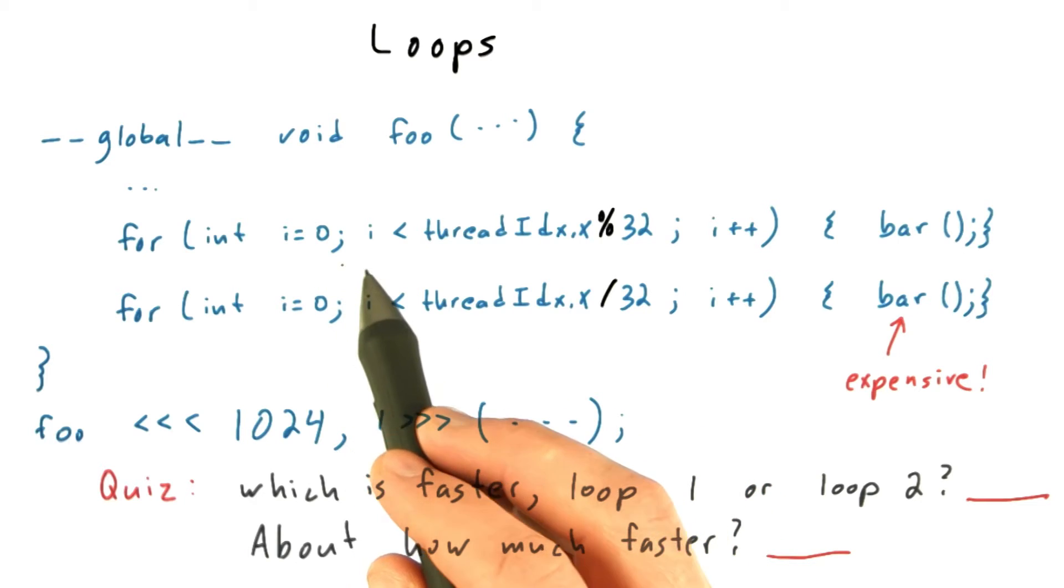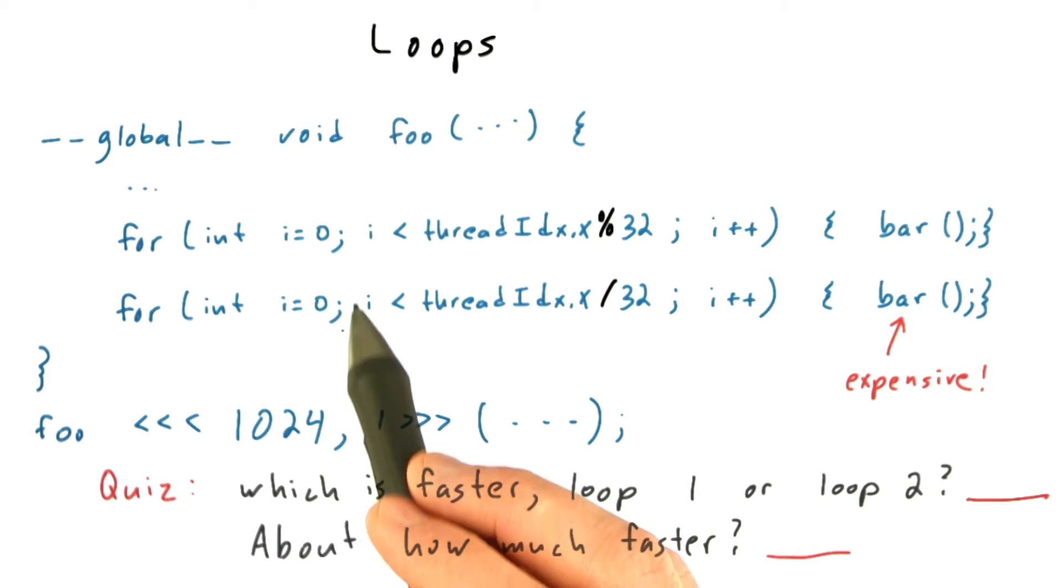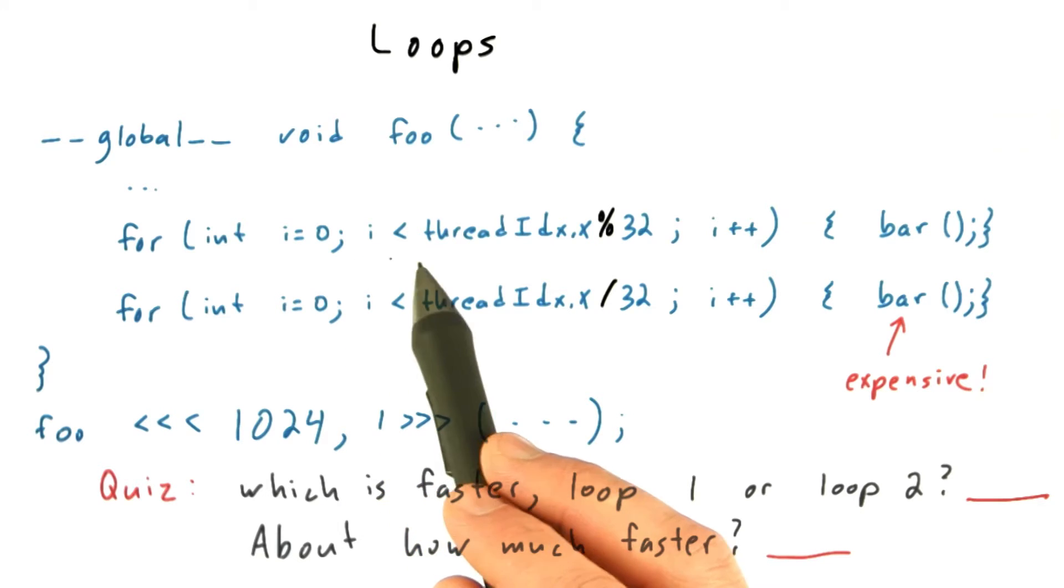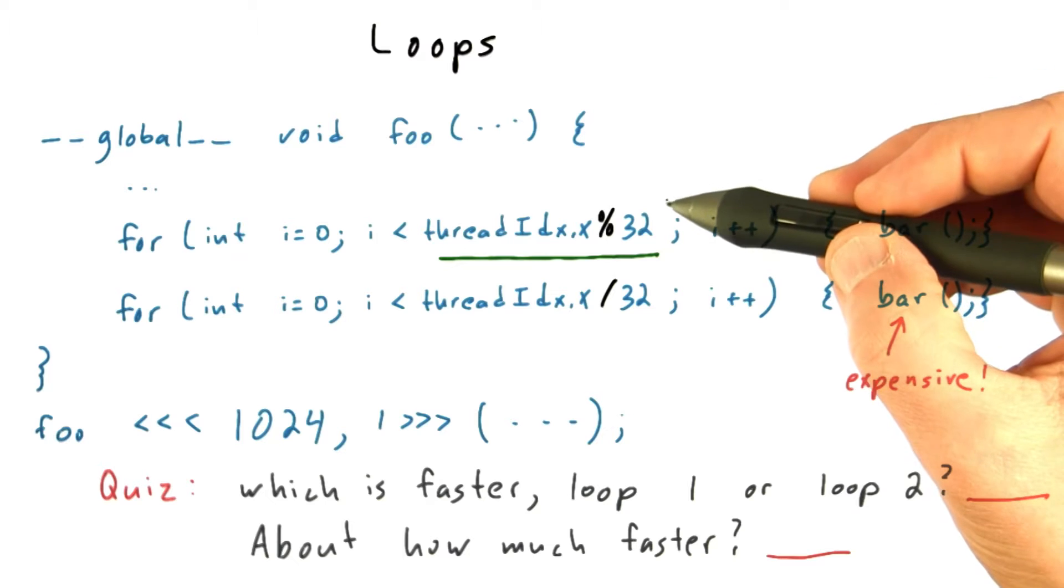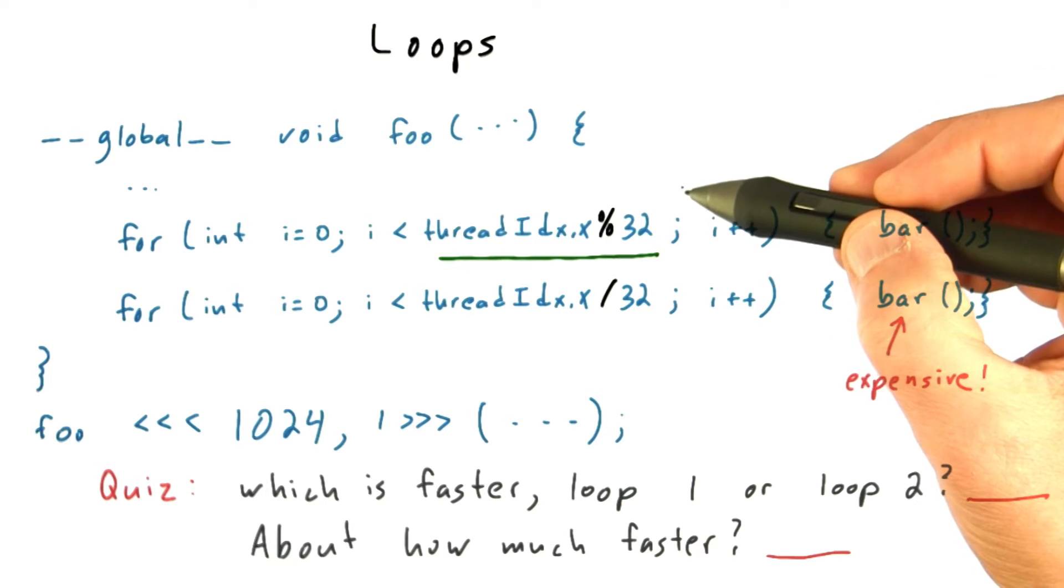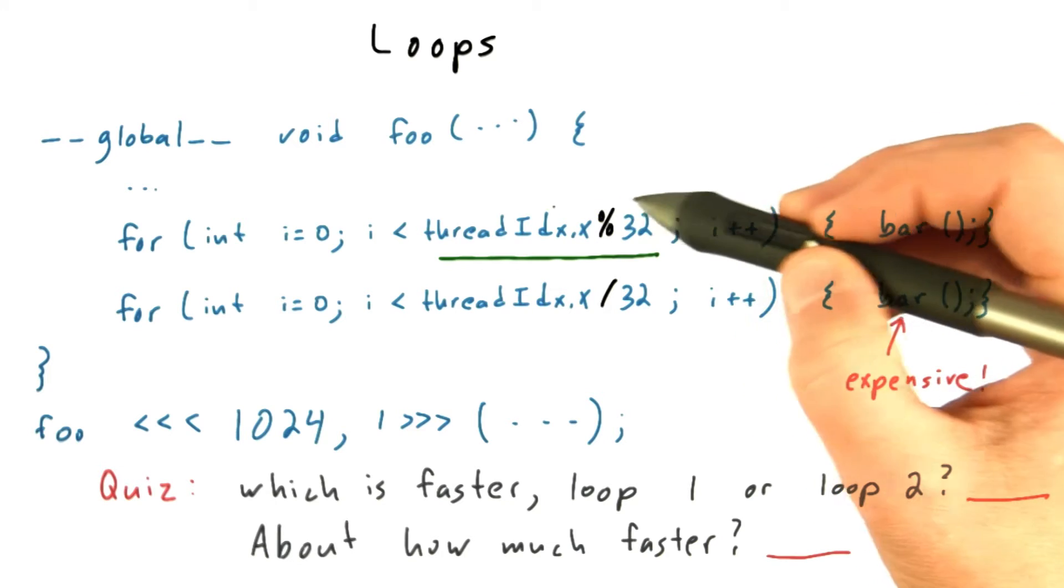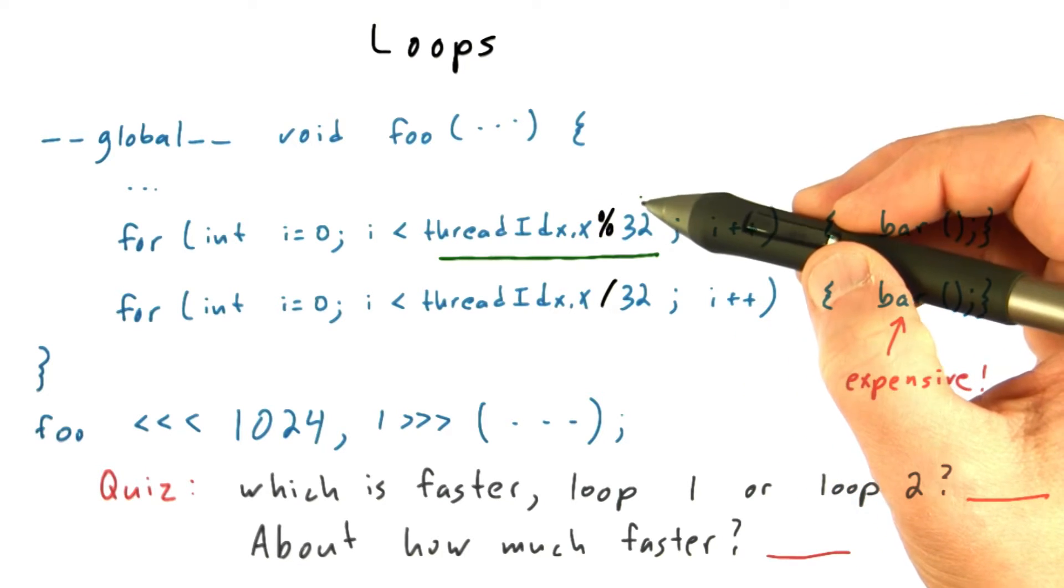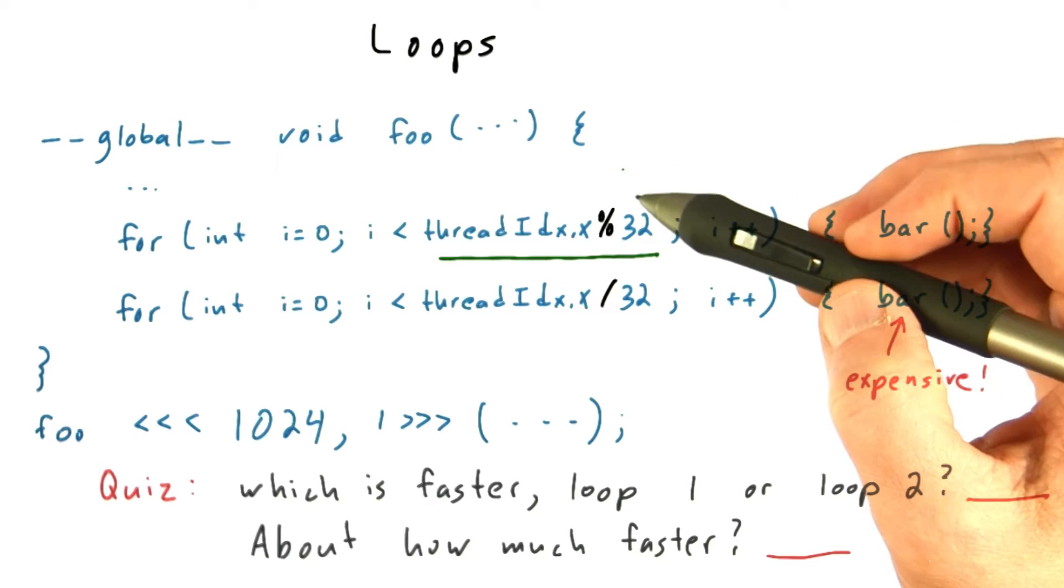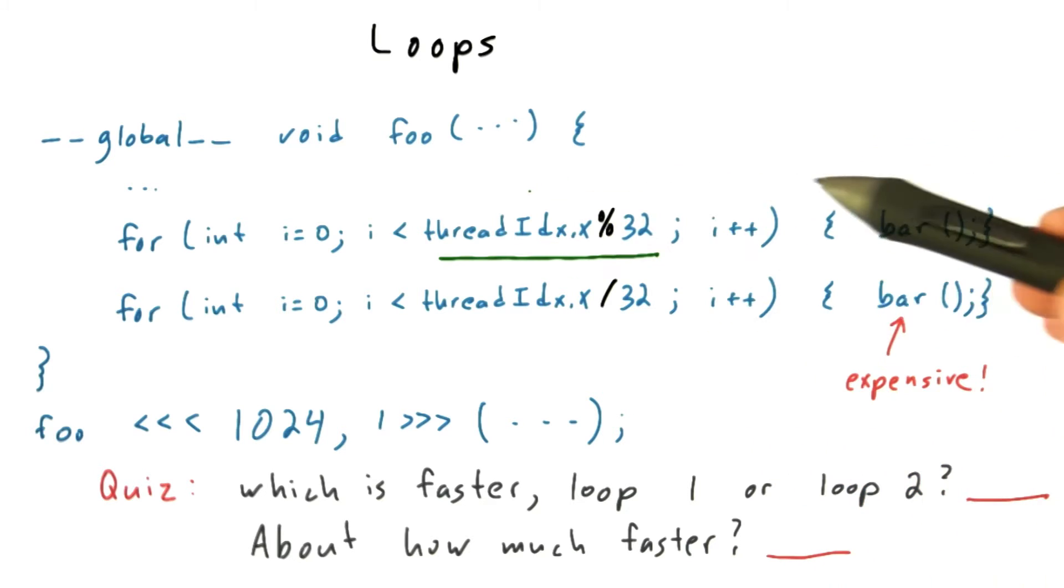So to answer this, we want to look at these for loops and decide how many times each warp is going to have to execute the for loop. And that means how many times at least one thread in the warp is going to have to execute it. So looking at this expression here, for a single warp, these values will vary from 0 to 31. So there will be at least one thread in that warp for whom this modulo expression evaluates to 31. And that means that the entire warp is going to go through the motions of executing this bar function 31 times.